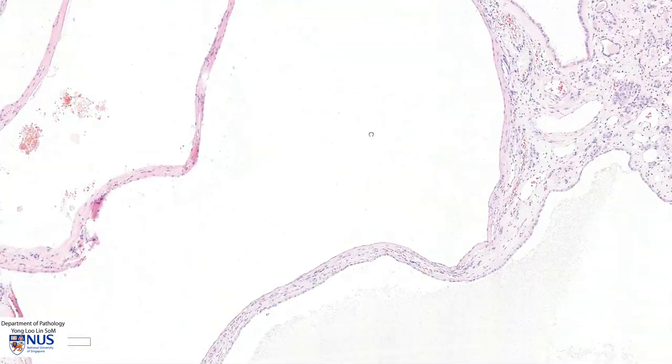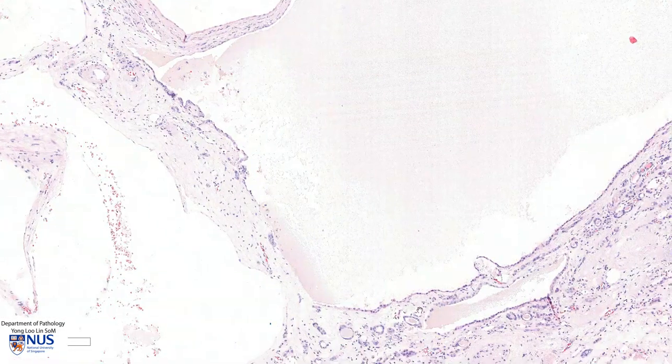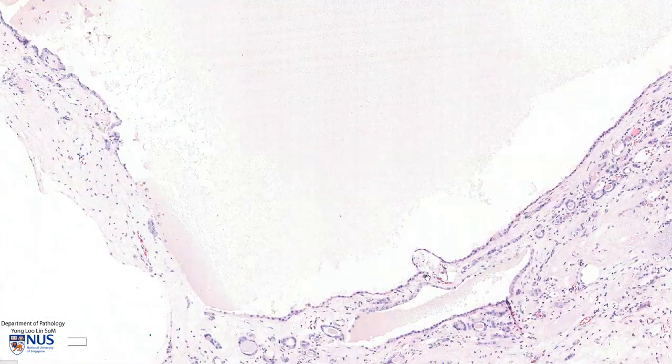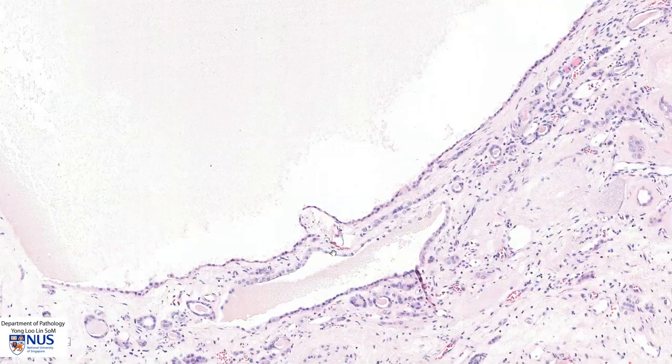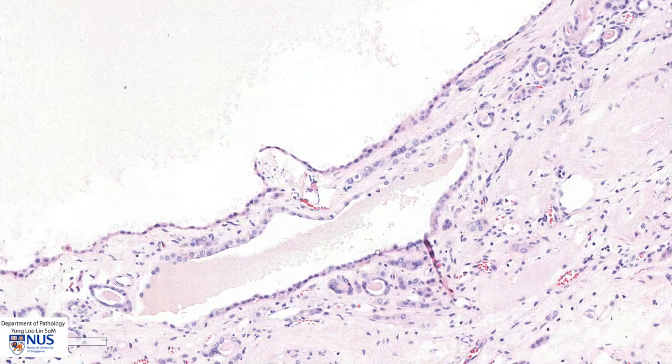Let's move around and look at a few more of these cystic structures. Again, we can see this very bland cuboidal lining epithelium.